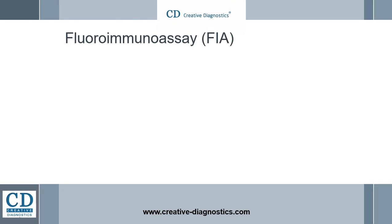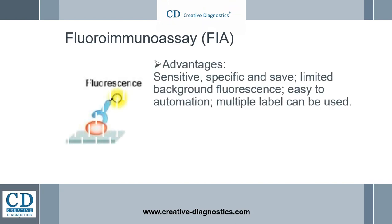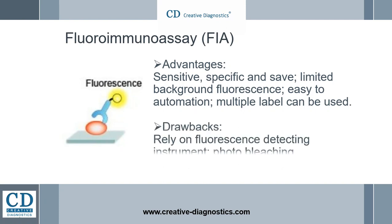Fluoroimmunoassay (FIA) is analogous to RIA, except that the label is a fluorophore, for example FITC and phycoerythrin, rather than a radioisotope. Fluorescence signal can be measured directly by a detecting instrument.